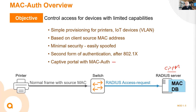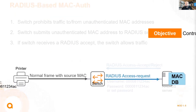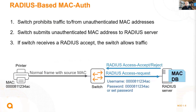MAC authentication can be used in different contexts, including a guest solution with MAC caching. For RADIUS MAC authentication, by default the RADIUS server uses the MAC address as both the username and password. Initially when you connect the traffic is rejected, then authentication is performed based on the MAC address. You can also set a global password, and control the format of the MAC address - uppercase, lowercase, with colons, dashes, or hyphens.